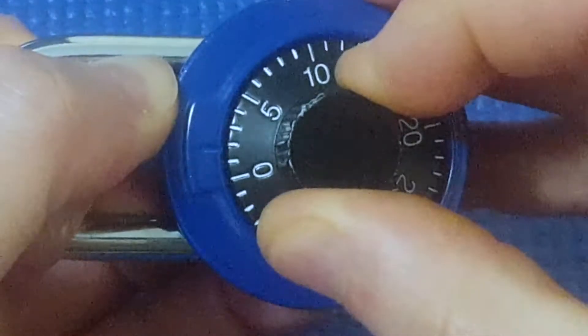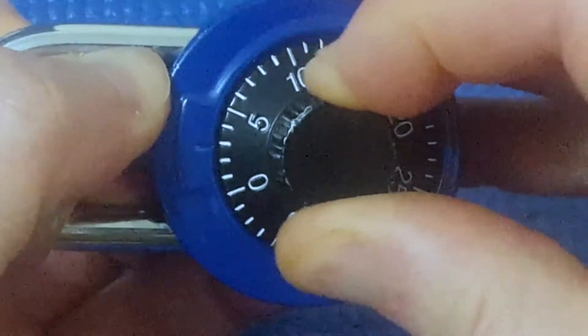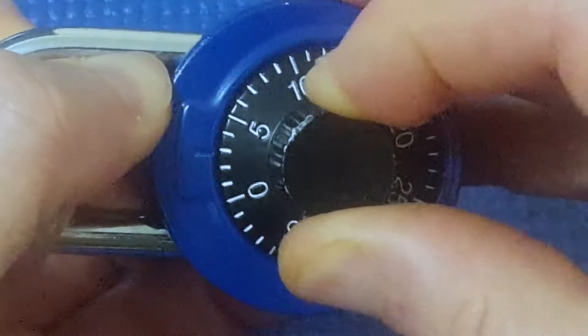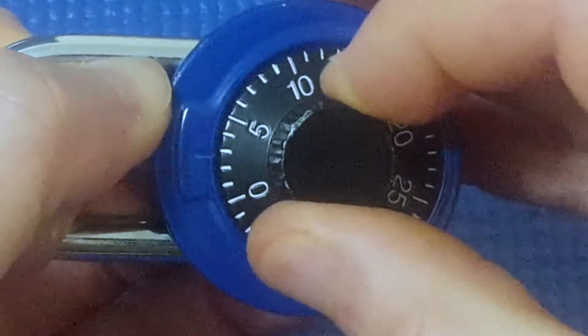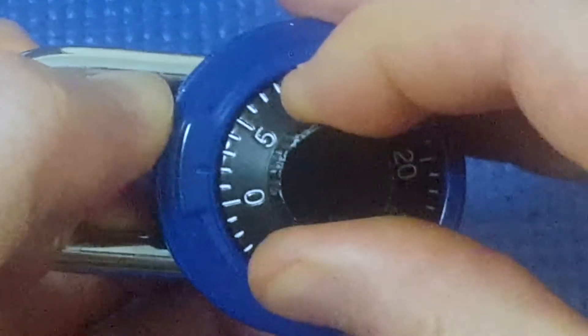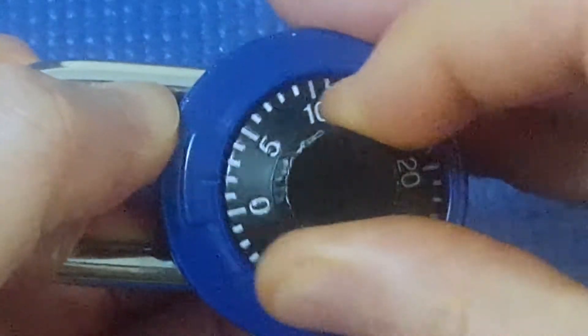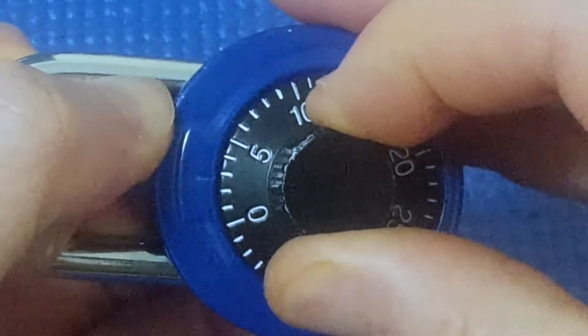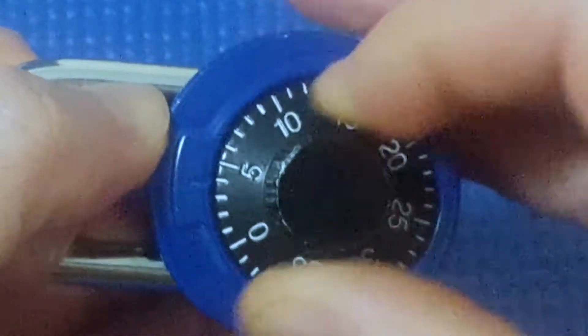So the first number after zero is between two and three. That's about one number of play with tension on the shackle. Next one clicks into five and six, that's about one number of play.